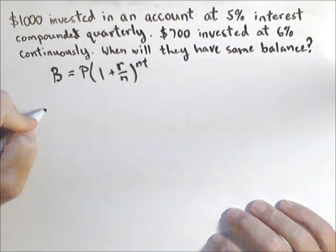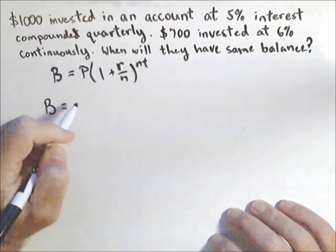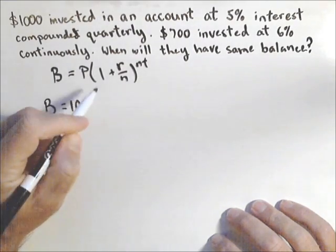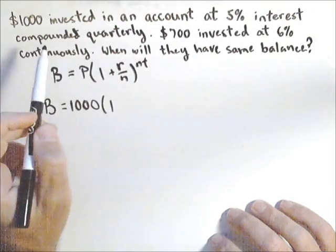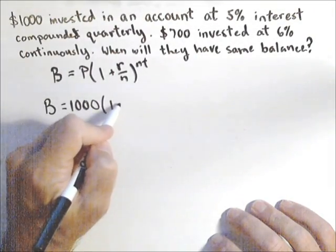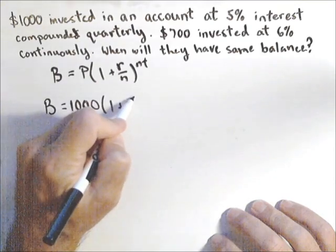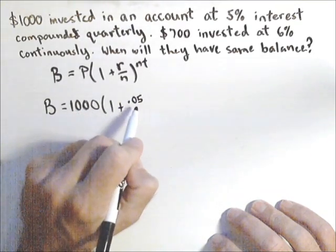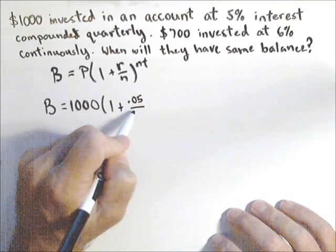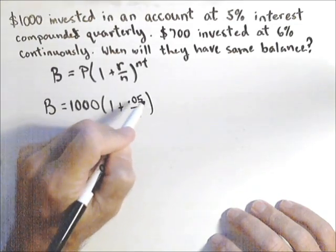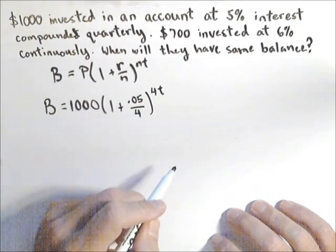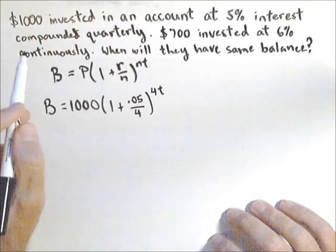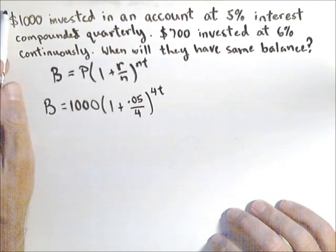So if we want to do one for $1,000, that's our principal or our initial value. And it's going in an account paying 5% compounded quarterly. So .05, because we need to change our rate to a decimal. Quarterly is 4 times per year. So N will be 4 to the 4t. So there's our bank account or balance for the first account.